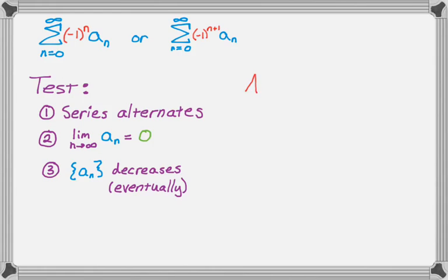If those three things are true then the series converges, but this is a test for convergence. So if those aren't true it doesn't necessarily mean that it's going to diverge. It's just if they're true it definitely converges. So let's take a look at an example.